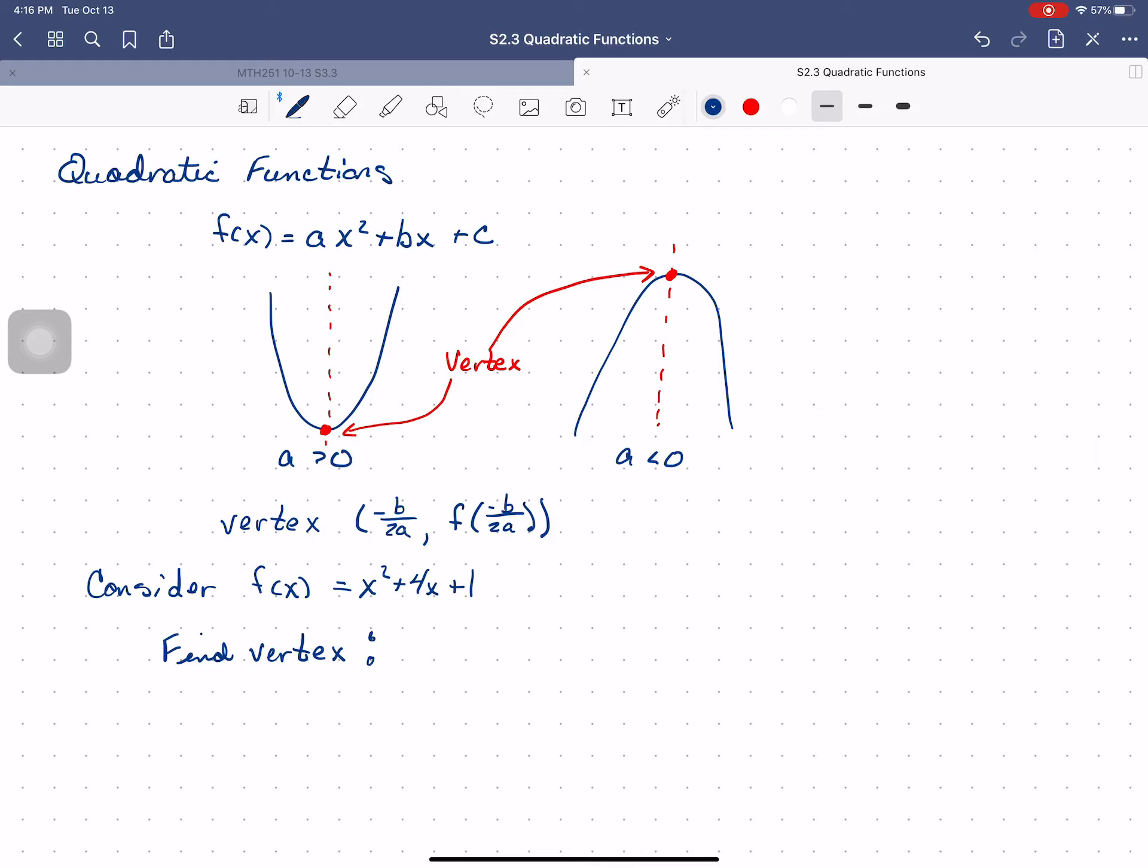We know that the x-coordinate of the vertex is at -b, which is 4, divided by 2 times a, which is 1, which is -2.